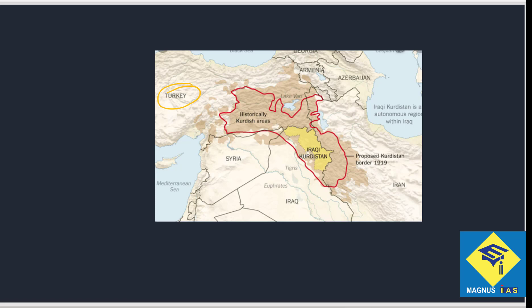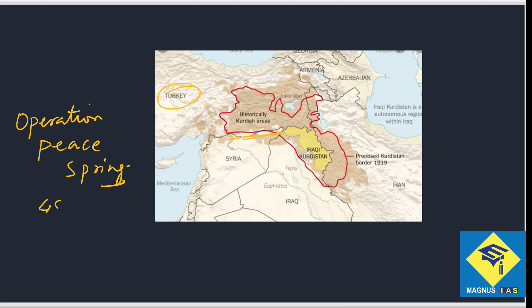While Turkey has been active in the 8-year-old Syrian civil war, its recent military incursion — known as Operation Peace Spring — aims to create a safe zone that is 480 km wide and 35 km deep inside Syria.